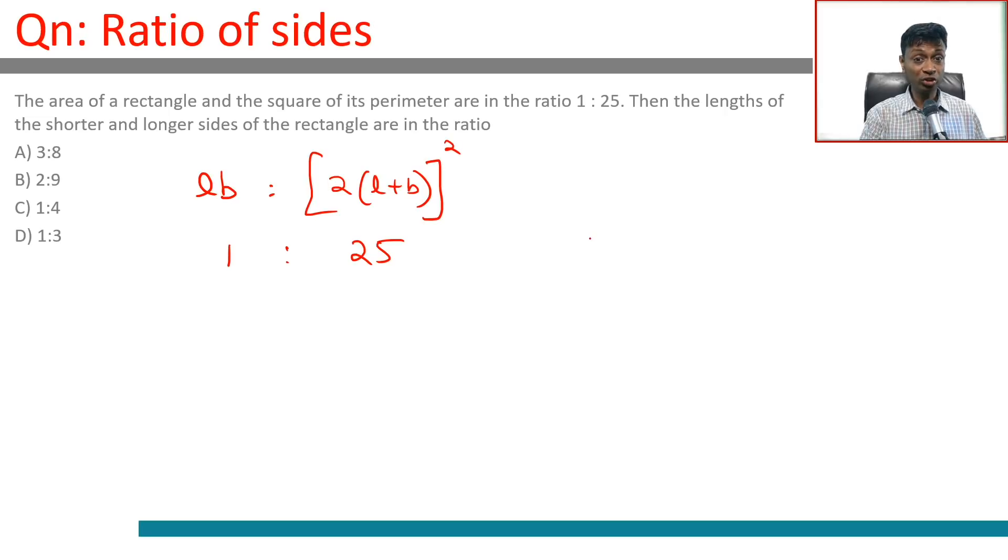I'm going to write down this equation and then figure this out. LB is to 2 times L plus B whole square is 1 is to 25. We need to find the ratio B is to L, shorter to longer side.